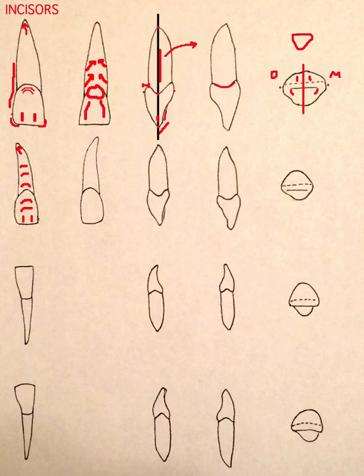The proximal contacts here start—remember on the central this was at the distal between the incisal and middle thirds. So here it's between incisal and middle thirds, moves down to the middle third. This disto-incisal angle here is very curved. That's a unique feature of the facial aspect of this maxillary lateral.